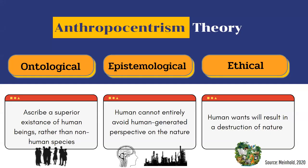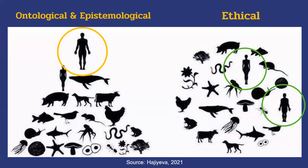Let's move to the 11th theory: anthropocentrism. This theory includes three forms — ontological, epistemological, and ethical. The ontological form talks about the superiority of humans compared to nature. The epistemological form talks about how we as humans cannot avoid taking resources from nature to serve human needs. The ethical form discusses the destruction of other species and nature caused by humans. For easier understanding, the first two forms focus only on the intrinsic value of humans, but the last one considers value as a whole.